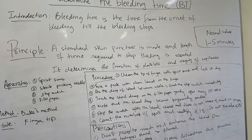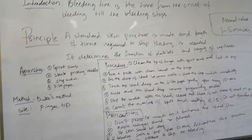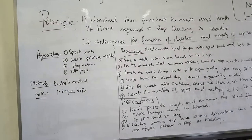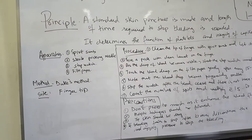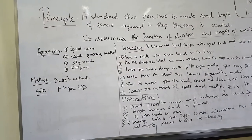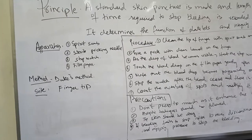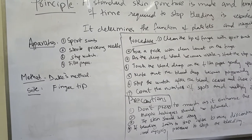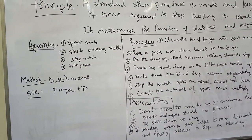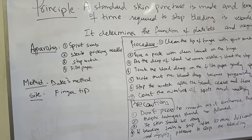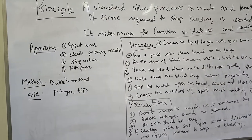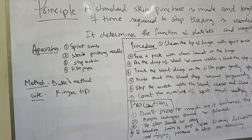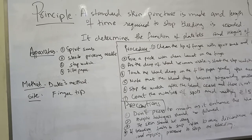Now comes the apparatus. We should have a spirit swab, a sterile pricking needle, a stopwatch, and a filter paper. The method we use is called Duke's method.